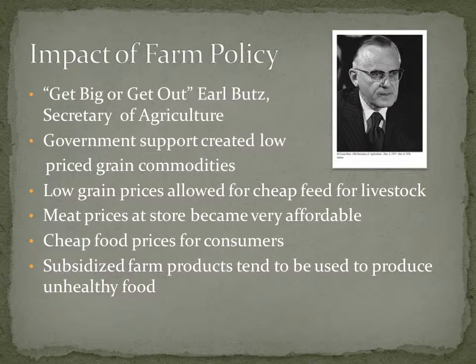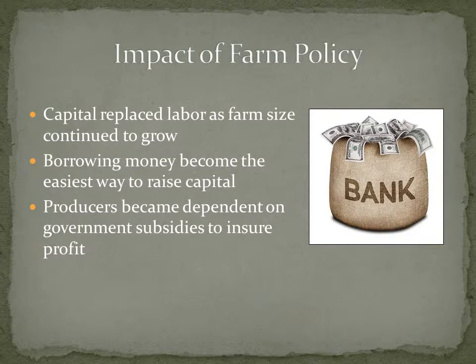But subsidized farm products tend to be used to produce food that's not that healthy — and that's my opinion on what's wrong with our farm policy today. It encourages production of corn and soybeans, and both of those products tend to produce processed food that is not that healthy. With the farm policy, capital replaced labor as farm size continued to grow. Borrowing money became the easiest way to raise capital, and today's farmers are dependent on government subsidies and crop insurance to ensure a profit. The government has kind of eliminated a lot of the risk.